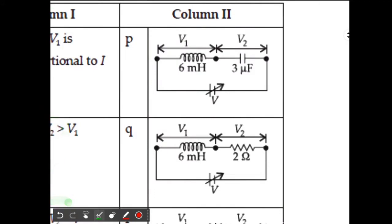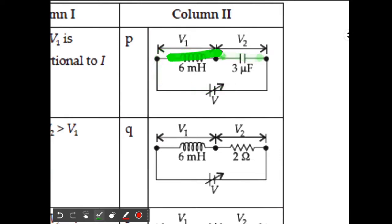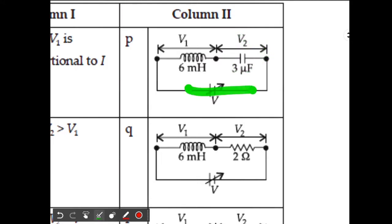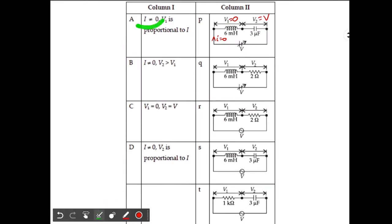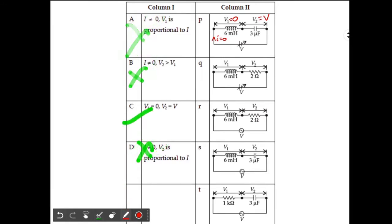In the first circuit we have a DC battery, an inductor and a capacitor. For steady state DC, there is no voltage across the inductor, and no current flows through the capacitor. So the current I will be zero because of the capacitor. Therefore V1 will be zero and V2 will be equal to V. Looking at the options: A, B, and D all say I is not equal to zero — those are wrong. Only option C is correct: V1 equals zero, V2 equals V.